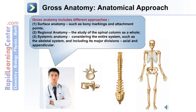Gross anatomy includes different approaches. For example, surface anatomy, such as bony markings and attachment points, as can be seen in the left diagram of the individual vertebra. Next would be regional anatomy — the study of, in this case, the spinal column as a whole, shown in the middle diagram. The third is systemic anatomy, where we consider the entire system, such as the skeletal system, including its major divisions of axial and appendicular.